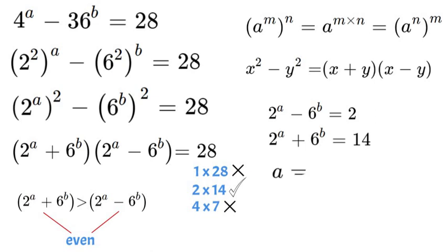If A is equal to 3, if we plugged in 3 for the top equation, 2 to the power of 3 is 8 minus 6 to the power of what gives us 2. So 8 minus 6 is equal to 2. So in this instance B would have to be 1.